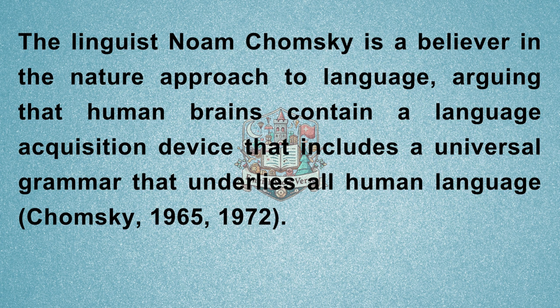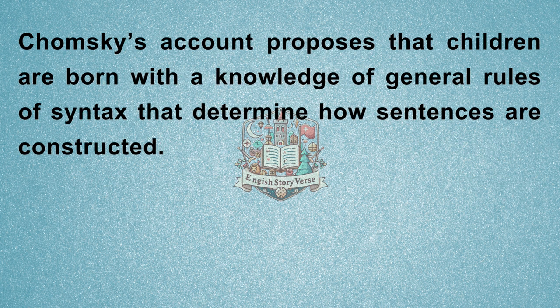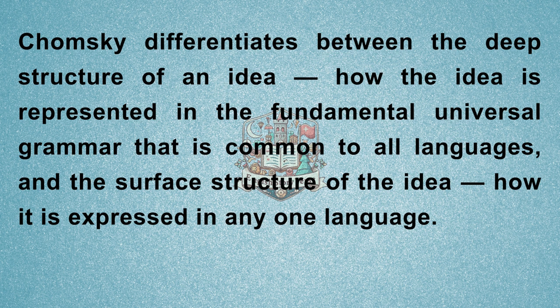The linguist Noam Chomsky is a believer in the nature approach to language, arguing that human brains contain a language acquisition device that includes a universal grammar that underlies all human language (Chomsky, 1965–1972). According to this approach, each of the many languages spoken around the world — there are between 6,000 and 8,000 — is an individual example of the same underlying set of procedures that are hardwired into human brains. Chomsky's account proposes that children are born with a knowledge of general rules of syntax that determine how sentences are constructed. Chomsky differentiates between the deep structure of an idea — how the idea is represented in the fundamental universal grammar common to all languages — and the surface structure of the idea, how it is expressed in any one language.